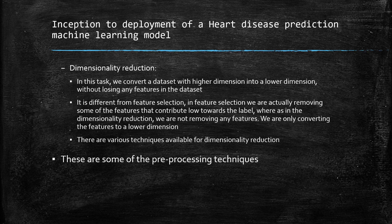Dimensionality reduction is the task in which we convert a dataset with higher dimensions into a lower dimension without losing any features. In contrast to feature selection, where we remove low-contributing features, in dimensionality reduction we do not remove any features — we only convert them to a lower dimension. There are well-known techniques for this, such as PCA, which we will look at in upcoming episodes.